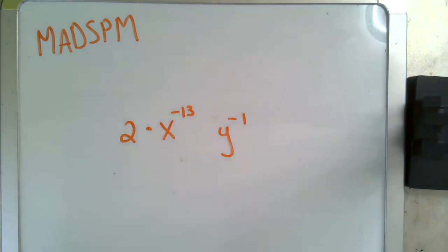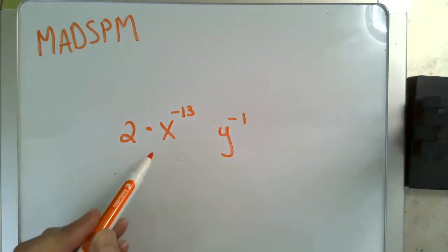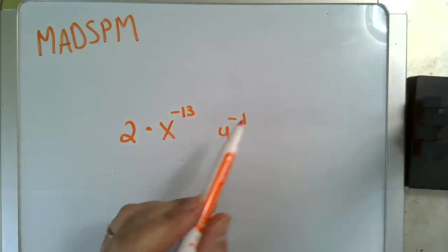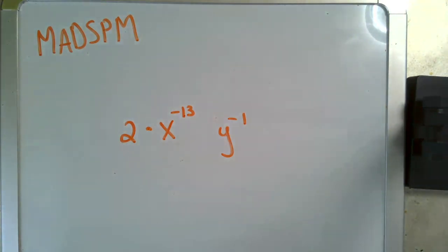And then finally, I don't want to leave any negative exponents. And I remember that a negative exponent can be rewritten as one over the positive version. That's going to happen for both my x to the negative thirteen and y to the negative one. But my two will stay on the top of my fraction. And that will look like this. And that is my final answer.